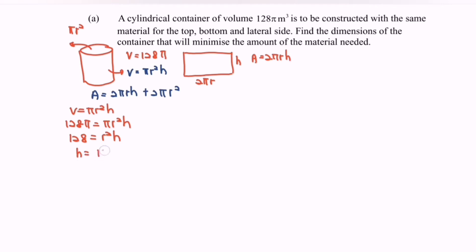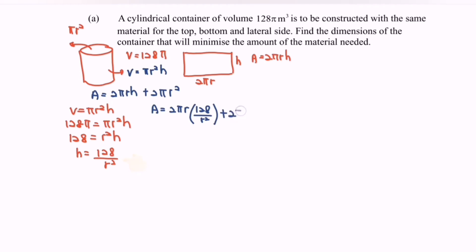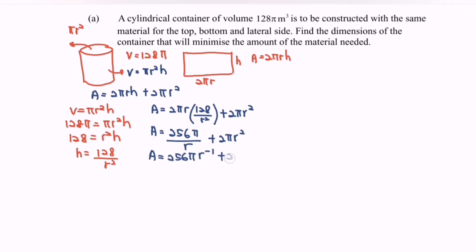Solving for h gives h = 128/r². Next, substitute h into the area formula. A = 2πr × (128/r²) + 2πr². Simplifying, we get A = 256π/r + 2πr², which can be rewritten as A = 256π·r⁻¹ + 2πr².